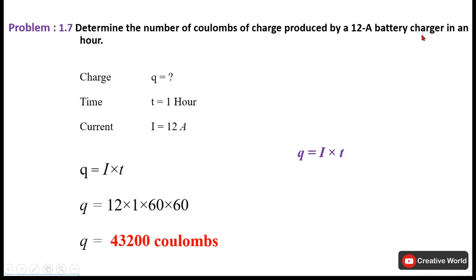Problem 1.7: Determine the number of coulombs of charge produced by a 12-ampere charger in one hour. Current and time are given, but time is in hours. We convert: 1 hour × 60 × 60 = 3600 seconds. Using Q = I × T = 12 × 3600, the charge is 43,200 coulombs.